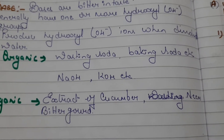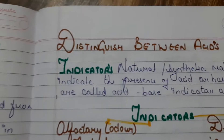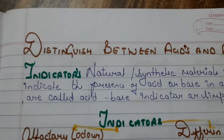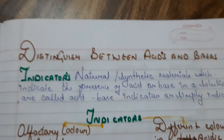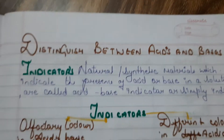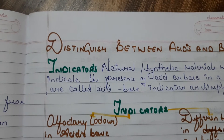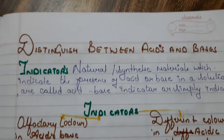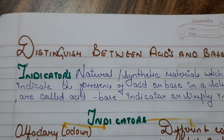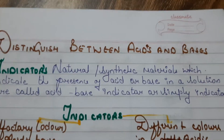To differentiate between acids and bases, we must use an indicator. Indicators may be natural or synthetic materials. They are substances which indicate the presence of acid or base in a solution, and are called acid-base indicators or simply indicators.